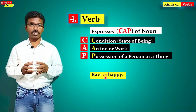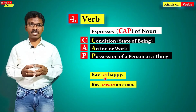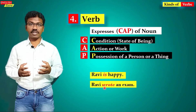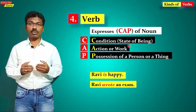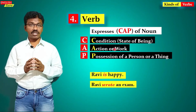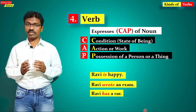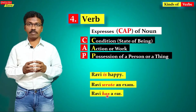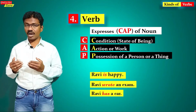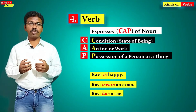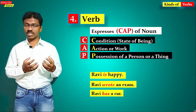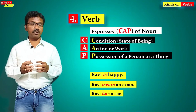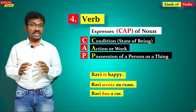For example, if you say 'Ravi is a happy person,' the word 'is' is talking about the condition or state of being of Ravi. Whereas if you say 'Ravi wrote an exam,' 'wrote' is talking about an action or work done by Ravi — so 'wrote' is a verb. And if you say 'Ravi has a car,' 'has' is talking about the possession of Ravi, what Ravi owns — so it is also a verb.